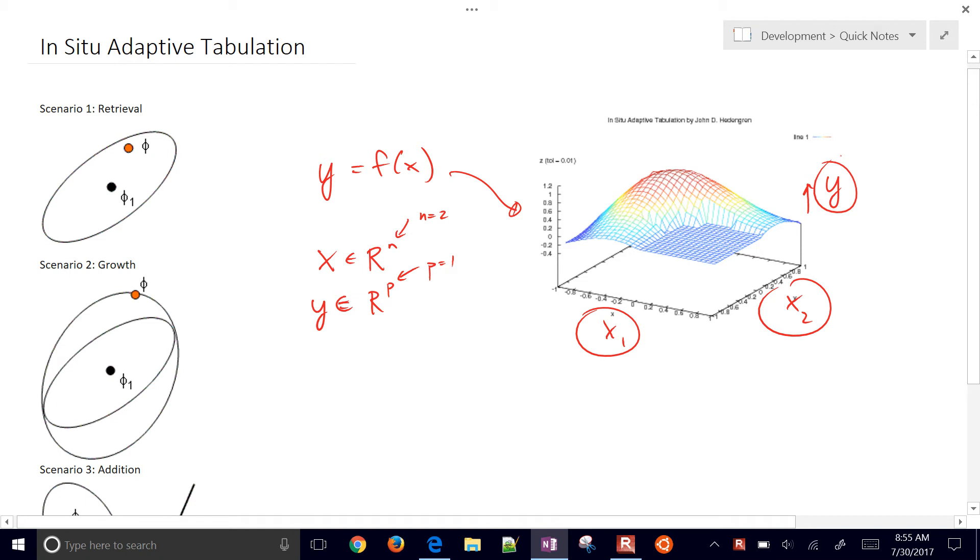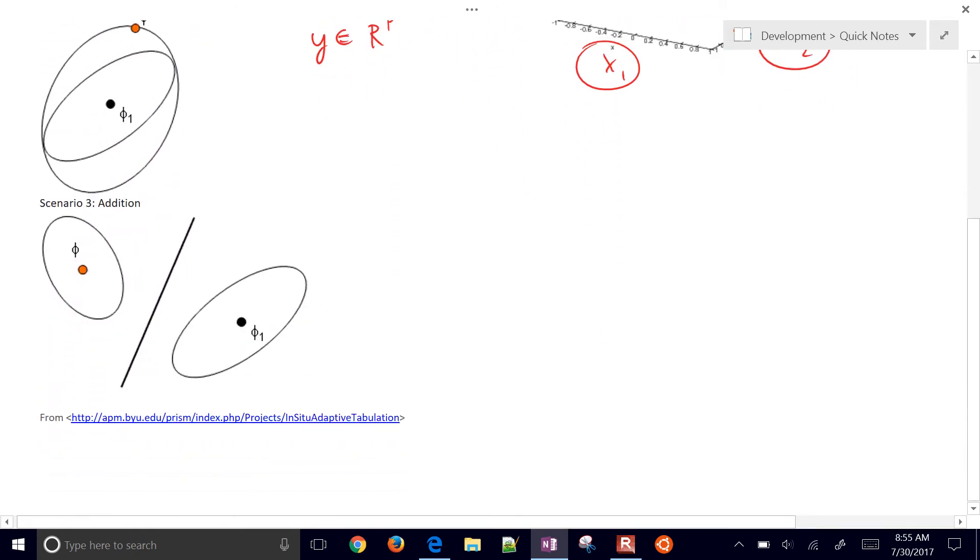Now in-situ adaptive tabulation works by dividing up the nonlinear surface into multiple linear regions and then controlling the accuracy of the approximation. So in a scenario, let's just go ahead and start with scenario 3.